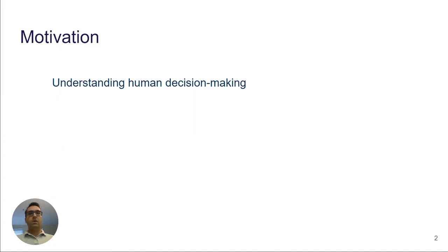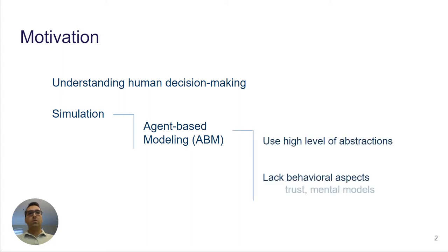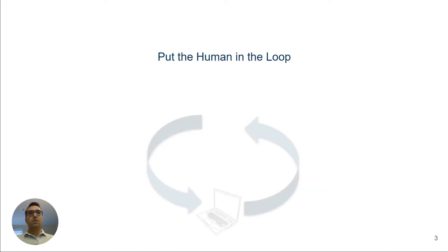In this study we are interested in understanding human decision-making processes. This is of interest in many different fields and many different methods are used to get such understanding. Simulation is one of the tools that are widely used to analyze and model human decision-making. Among different simulation techniques, agent-based modeling is practical when we are dealing with human systems and try to model human behavior and social interactions. But since we usually do not have access to internal mechanisms that derive human decisions, these ABMs usually use a high level of abstraction or lack behavioral aspects such as trust or mental models. This is why we need to put the human in the loop to be able to inform agent-based models.